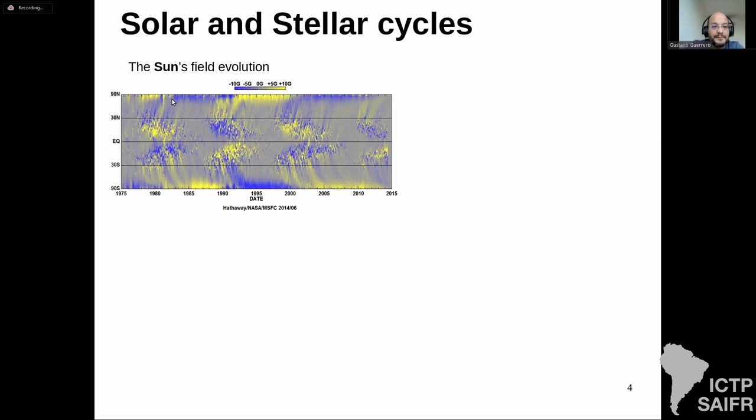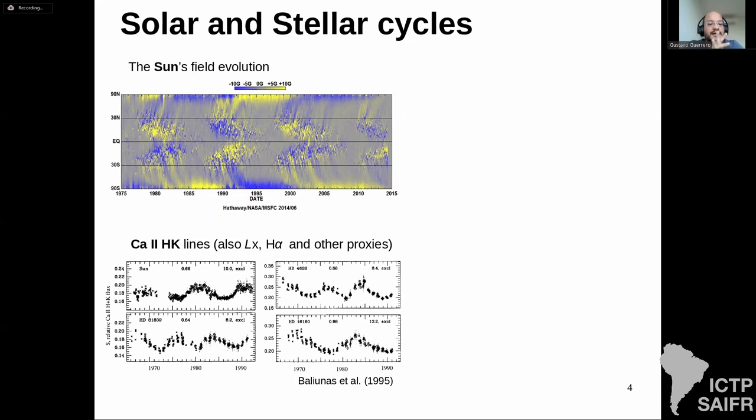At the same time, when the sunspot number is at maximum the dipolar field reverses at the pole — the magnetic field just flips, like the Earth's magnetic field has done several times in the past. But the Sun is not unique in having magnetic cycles.